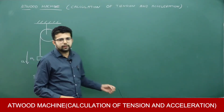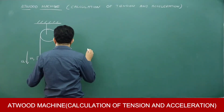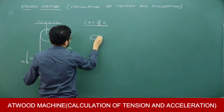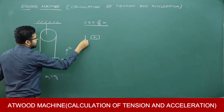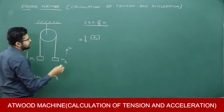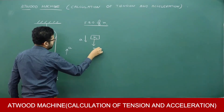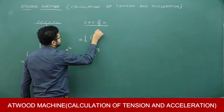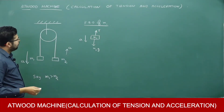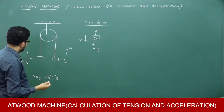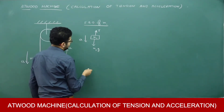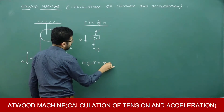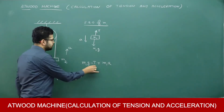To calculate tension and acceleration, we need to write the free body diagram. Free body diagram of M1: M1 is accelerating downwards. On M1, weight M1·G is acting downwards and tension T is acting upwards. These two forces together are responsible for the acceleration. Since M1 is accelerating downwards, the downward force should be bigger, so: M1·G − T = M1·A. This is equation number 1.